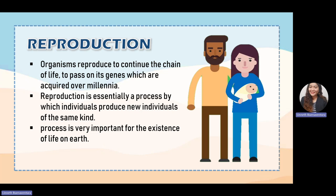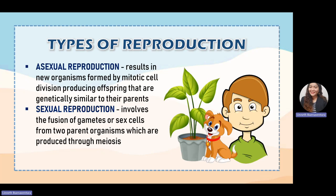Reproduction is a very important process for the existence of life on earth — without it, the population of a species will not prosper. We have two types: asexual reproduction, which results in a new organism formed only by mitotic cell division producing two identical daughter cells, and sexual reproduction, which involves the fertilization of egg cells using sperm cells, producing a zygote. In sexual reproduction, gametes are formed through meiosis.